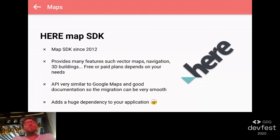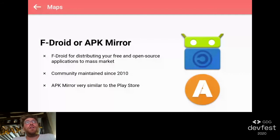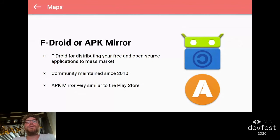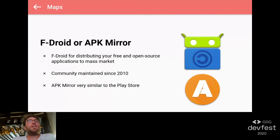Now let's see how we can distribute our application outside the Play Store. There are many stores available. Focusing on two: F-Droid, which is open source and free - if you're building a free and open source application you can definitely go for this store. They accept only open source and free applications. You can find some very nice stuff here, especially if you are in the open source world. It's community-maintained and has been there for 10 years.